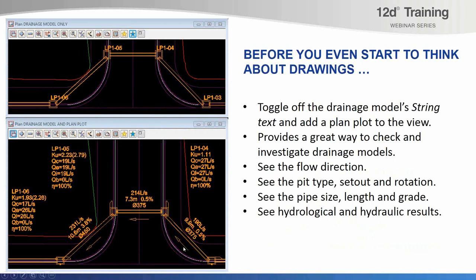With a drainage plan plot, you can see the flow direction, the pit types, lintel orientation and rotation, how it relates to the road design, the set out point, the pipe sizes, lengths and grades, and the hydraulic results — basically the flow rate in the pipes, hydrology flow rates, pit loss factors, and inlet efficiencies. The plan plot is customisable: you can show more or less information depending on precisely what you're interested in. The first step before thinking about drawings is to set up your plan view with a plan plot overlaid on your drainage model.